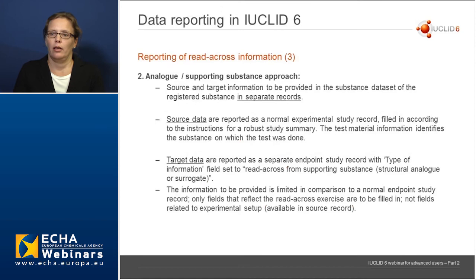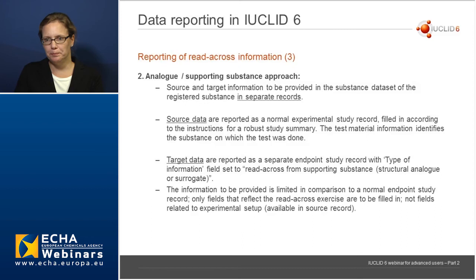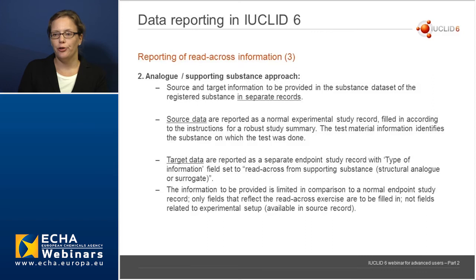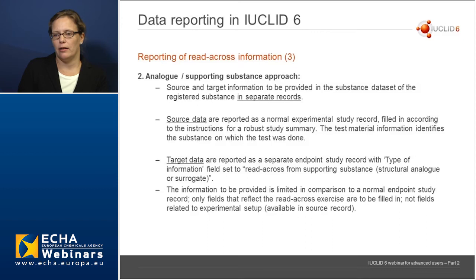For the analog supporting substance approach, there is a bigger change in IUCLID 6: source and target information are to be provided in the substance dataset of the registered substance in separate records, not together as was often the case in the past. The source data are to be reported as a normal experimental study record filled in according to the instructions for a robust study summary. It's important that the test material identifies the substance on which the experimental study was done. The target data are reported as a separate endpoint study record with the type of information field set to 'read-across from supporting substance, structural analog or surrogate'.